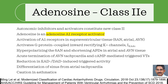Autonomic inhibitors and activators constitute the new Class 2. Adenosine is an Adenosine A1 receptor activator. Activation of A1 receptors in supraventricular tissue including the sinoatrial node, atrial tissue and AV nodal tissue activates G protein-coupled inward rectifying potassium channels. It causes hyperpolarization of the sinoatrial node and shortens action potential durations in atrial and AV nodal tissues. Adenosine is useful in the termination of AV nodal tachycardia, cAMP-mediated triggered ventricular tachycardias, and differentiation of sinus from atrial tachycardia. Note: Adenosine is contraindicated in asthmatics.